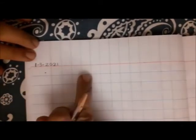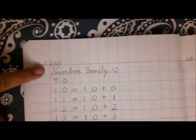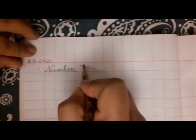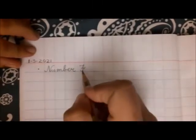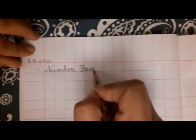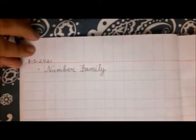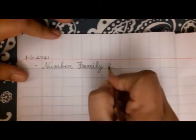Below the date, put a dot. Here we will write Number Family, just like we did on Friday. Write N-U-M-B-E-R, number, F-A-M-I-L-Y, family. Number family 20.